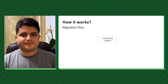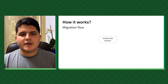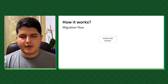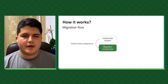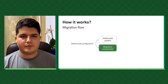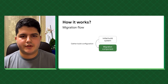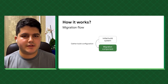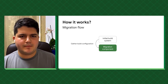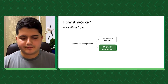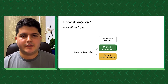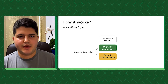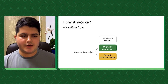So how does IRIN work? It starts with the initial build system. The migration component from IRIN gathers all the build configuration from your project — this can include the list of modules, the list of dependencies for each module, and many more properties. Based on that, it generates the corresponding Bazel scripts using the Starlark template engine.